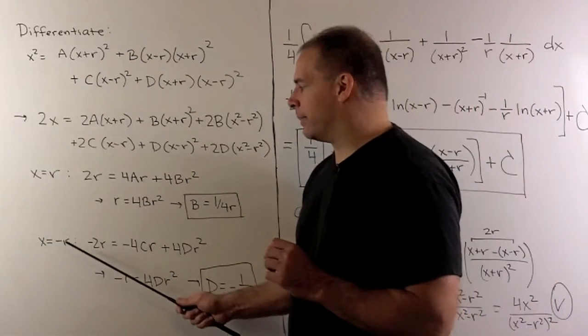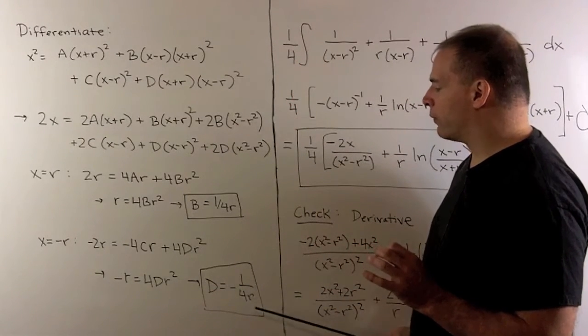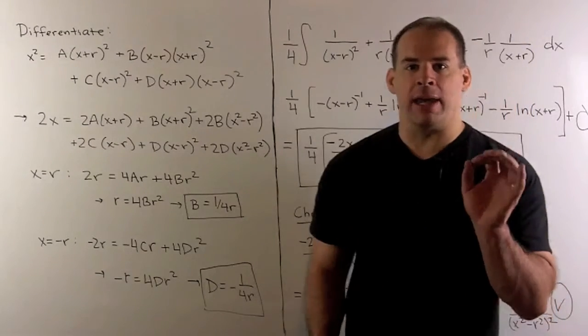If we use x equal to minus r, same idea. We get d equal to minus 1 over 4r. So I have a, b, c, and d, and now we can integrate.